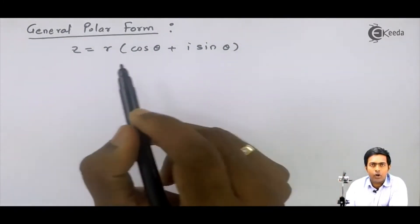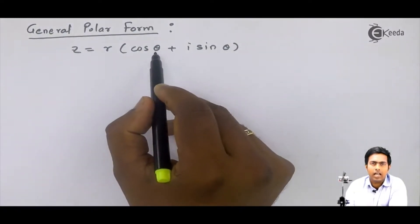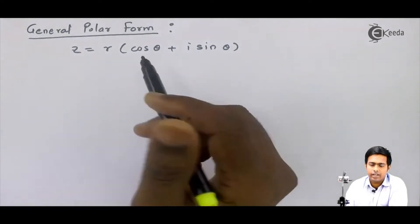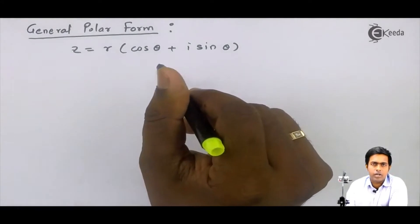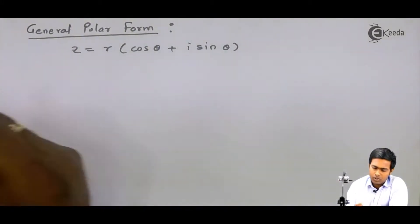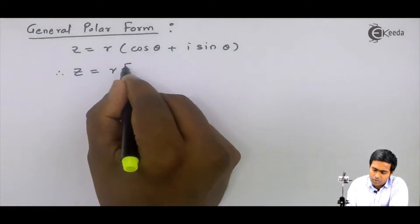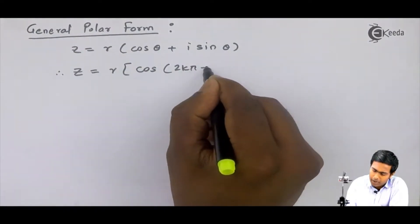This is the polar form of a complex number, where r is modulus and θ is called the amplitude of that complex number. If we want to find the general polar form of any complex number, then you just have to add 2kπ in amplitude. So here the general polar form will become r into cos of 2kπ plus θ plus i sine 2kπ plus θ.